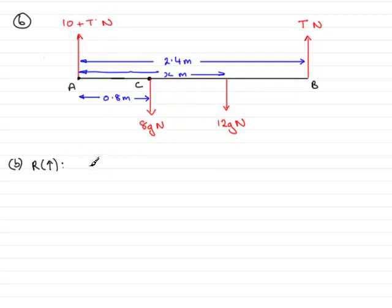So resolving upwards, taking upwards as positive, we have 10 plus T plus this force here of T newtons. And the 8G and the 12G act downwards, so they'll be negative. So that's minus 8G minus another 12G newtons. And the plank is in equilibrium, so the resultant force will be zero.